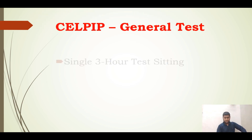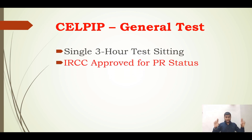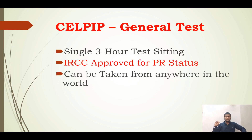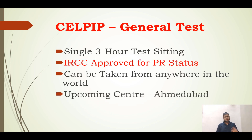The CELPIP General Test is completed in a three-hour sitting — approximately two hours and fifty minutes to three hours and ten minutes. It is approved for PR, meaning permanent residency of Canada can be obtained after giving this examination, provided you score well. This examination can be taken from anywhere in the world. Even in India, there are examination centers in multiple cities, and an upcoming center is in Ahmedabad, Gujarat.